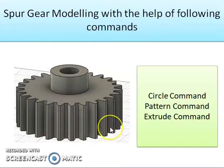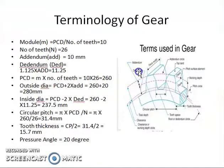Before creating this spur gear in Fusion 360, we first discuss the terminology of gear. We have the module, which is the ratio of the pitch circle diameter to the number of teeth. So we have the module as 10 mm. The number of teeth is 26. Addendum is the distance between the pitch circle to the top of the tooth in the radial direction, and we have that as 10 mm.